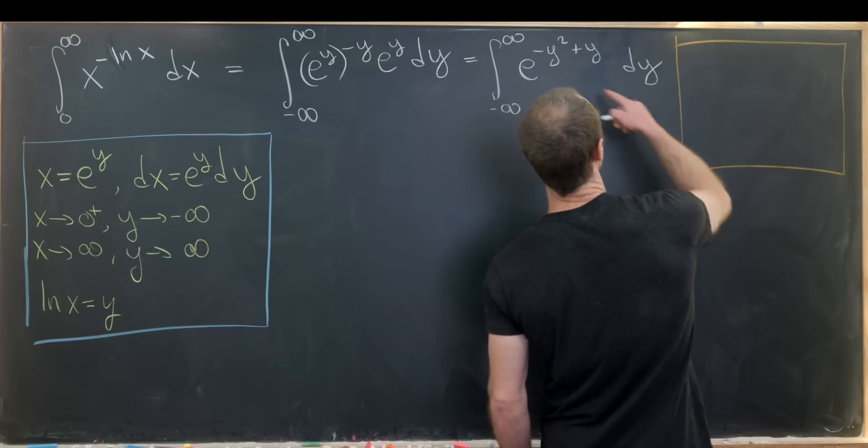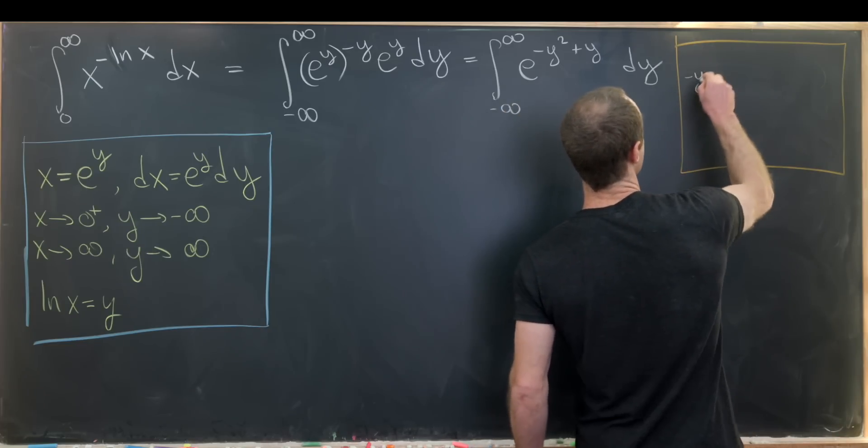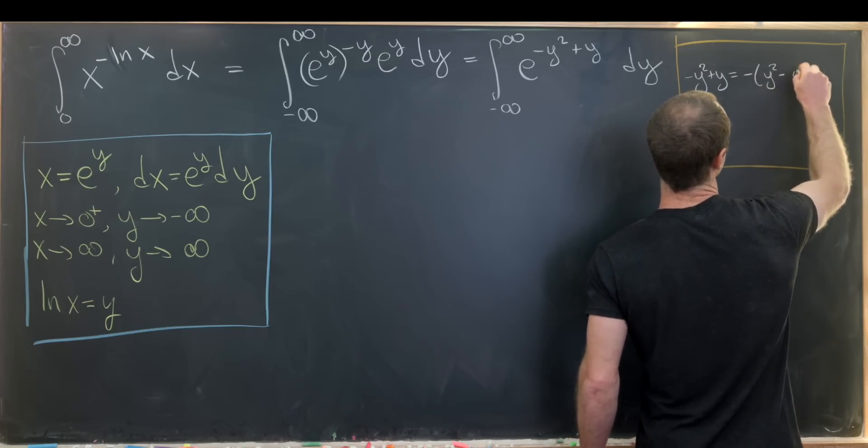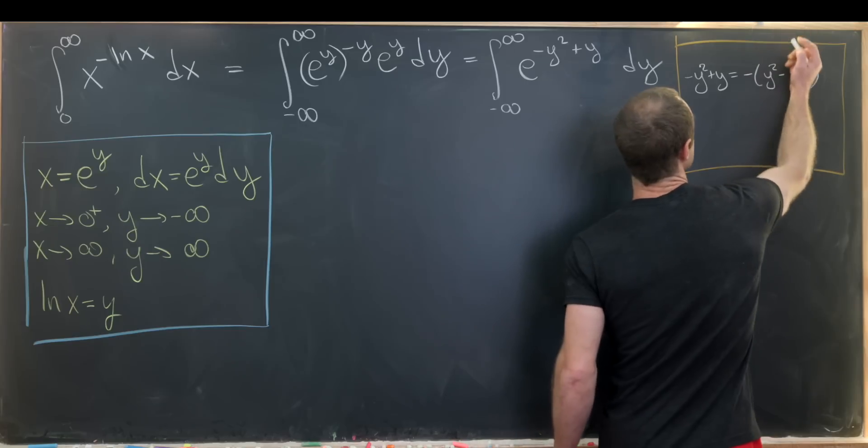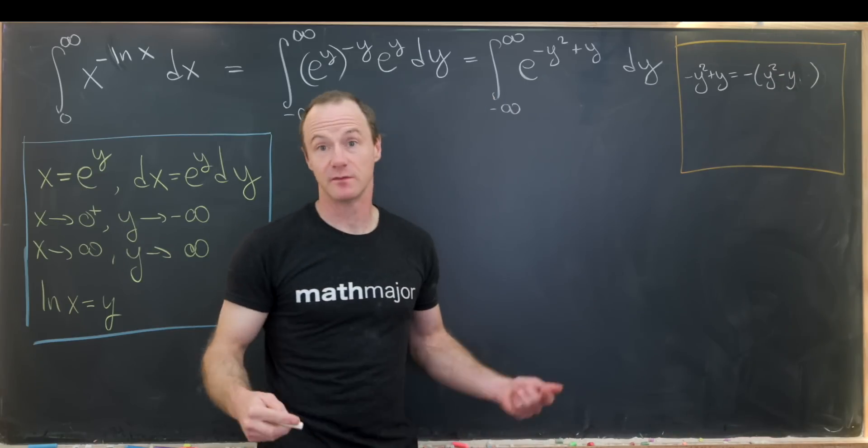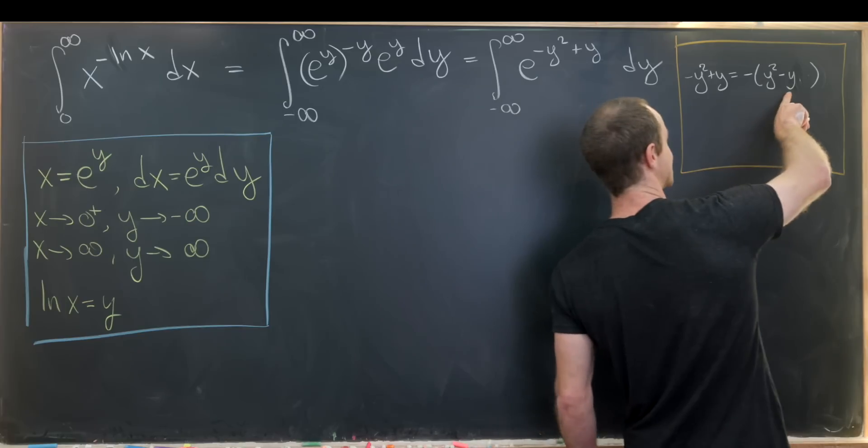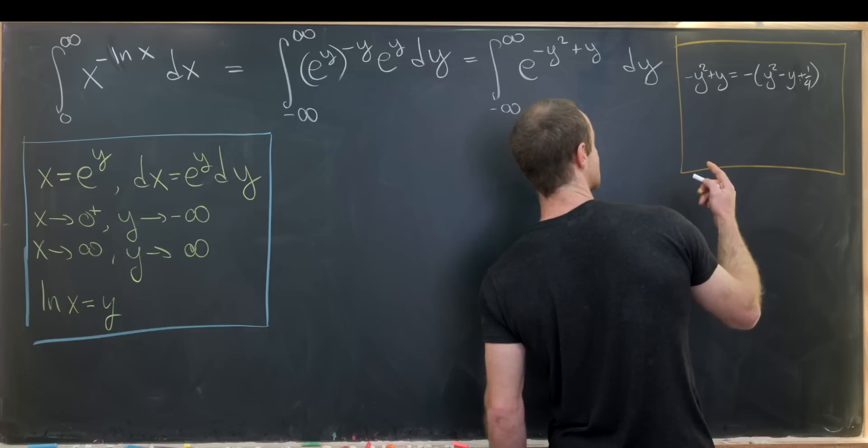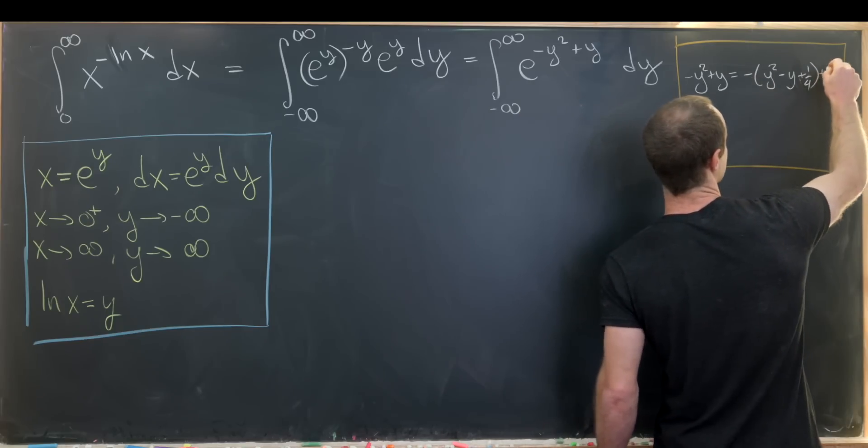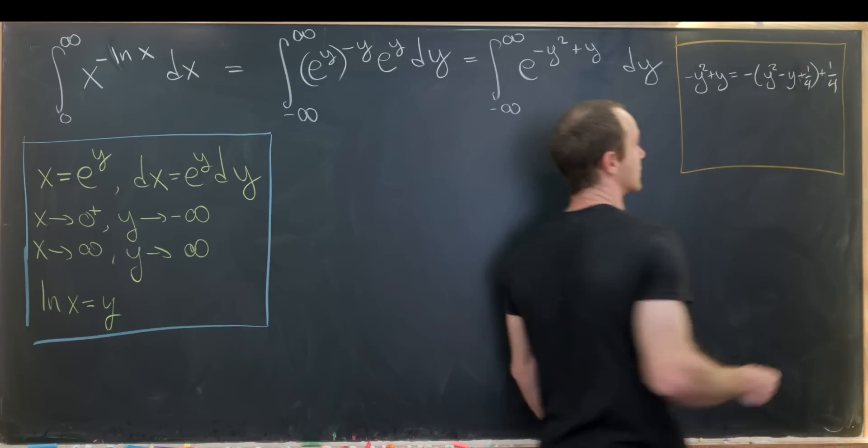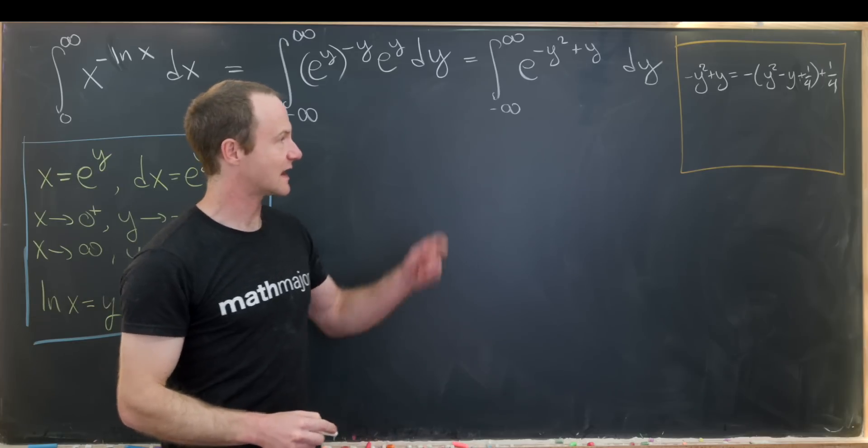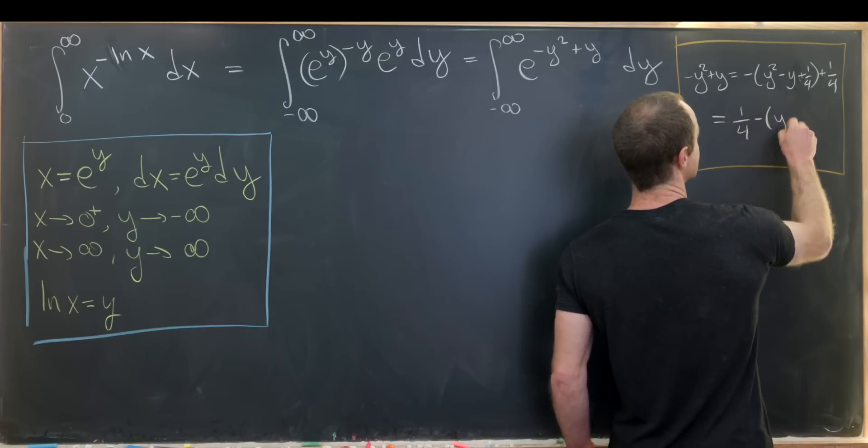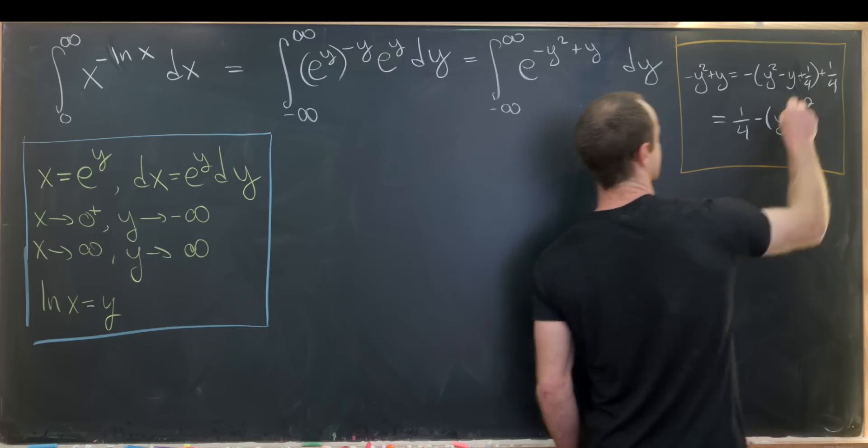So let's take this minus y squared plus y and factor a minus sign out. That gives us y squared minus y. Then we need to add something in here so that we complete the square. So that means we need to take half of this and square it. So we'll add one quarter here. But that means we need to subtract a quarter from the whole thing. But we've got a minus sign here. So that means we really need to add a quarter here. So that gives me the completion of the square. And I can finish that off by writing it as one quarter minus y minus one half quantity squared.